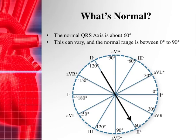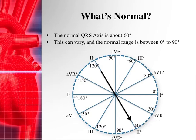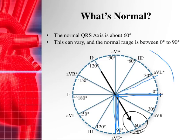So what's normal? The normal QRS axis is at about 60 degrees. That can vary anywhere in this quadrant from 0 to 90 degrees. And even if it deviates a little bit to the left — up to negative 30 degrees — that can be a normal variant as well. So this range can all be physiologically normal.